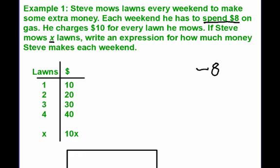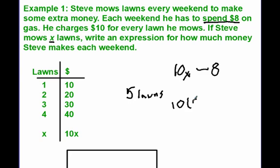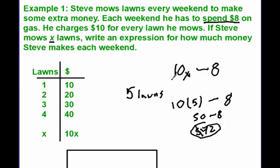We don't have to know the exact number to write the expression — the amount of money Steve makes is 10X. However much money he's making, he's going to take $8 away. For example, if Steve mows 5 lawns: $10 times 5 lawns minus the $8 he spends on gas. 10 times 5 gives us 50, and 50 minus 8 tells us Steve makes $42.